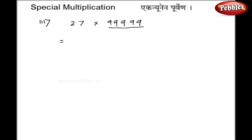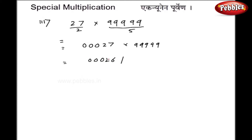To match the digits I have 5 digits in the multiplier and only 2 digits in 27, so I write 00027 and multiply by five 9s. The method is the same: 27 minus 1 gives 00026. Subtracting 00026 from 99999 gives 99973. So my final answer, omitting the leading zeros, is 2699973.